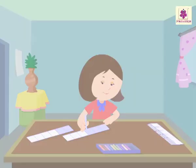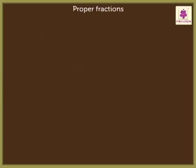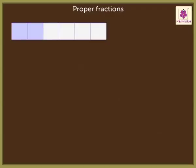Let us begin with proper fractions. Annie has coloured some portions of the grids. She has coloured two parts of the grid out of six. Next to it, she has written the fraction two-sixths.